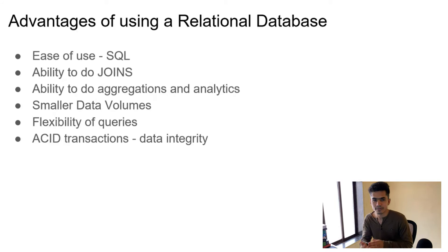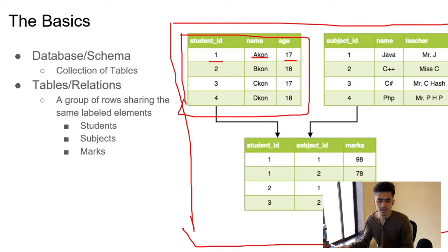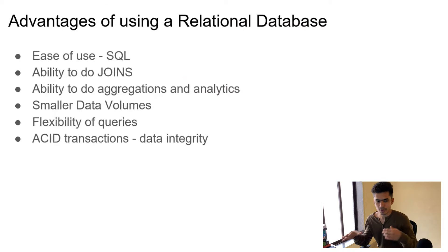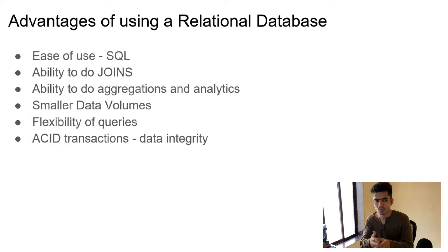There are several advantages to using relational databases. First, it's easy to use — you just write simple SQL queries to get or manipulate data. Second, you have the ability to do joins: for example, joining tables based on student ID. There are multiple types of joins such as left join, right join, inner join, and full outer join. Third, you can do aggregation and analytics — getting max values, minimum values, and so on. There are generally smaller data volumes, and flexibility of queries and ACID transactions.